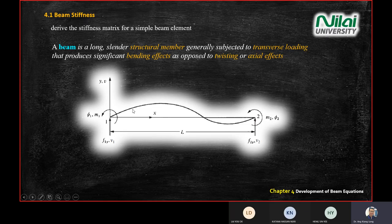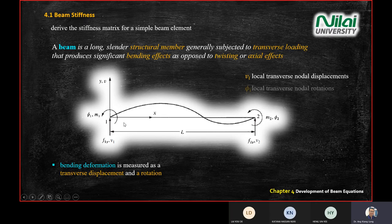You'll keep seeing the word 'transverse loading.' At nodes 1 and 2, you have a force, and under this force you have a moment, a rotation, and a displacement in the y-direction. So you have v, rotation, force, and bending moment.